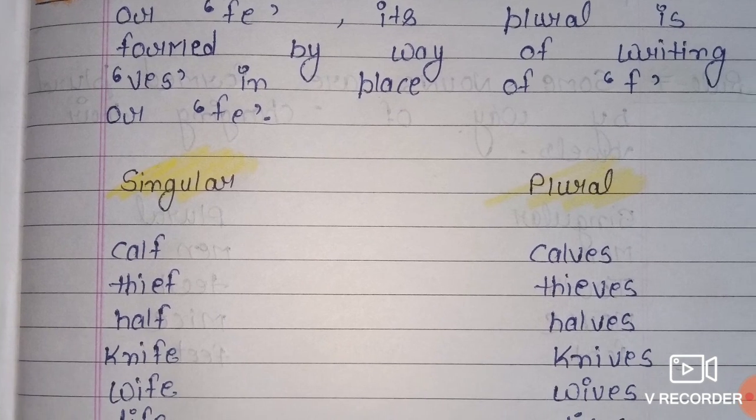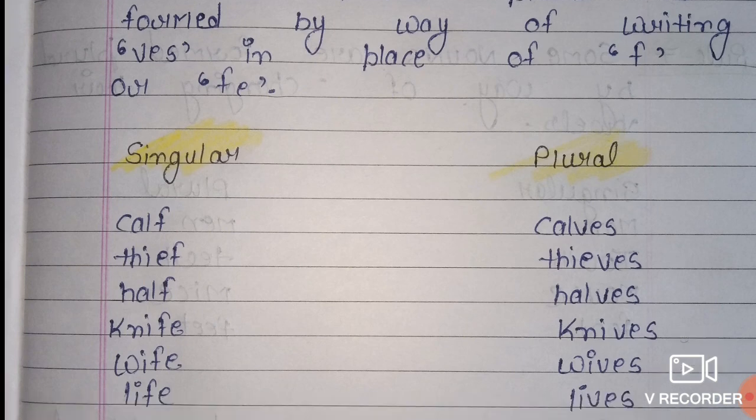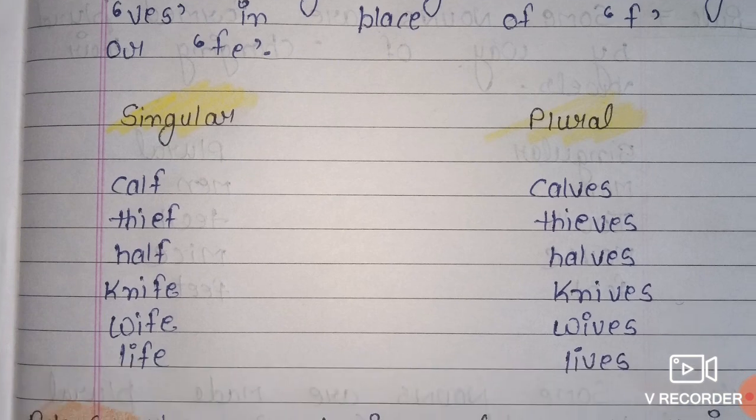Here we have singular and plural. First word: Calf — C, A, L, F. Here the word ends with F, so we have to use VES in place of F. Then we get Calves.